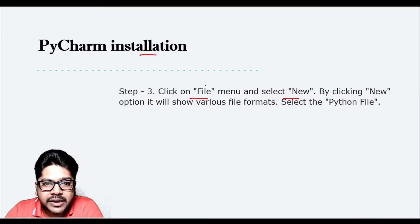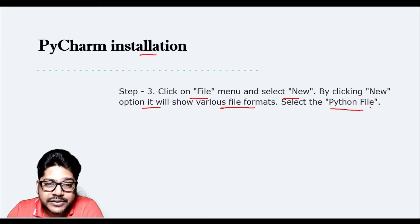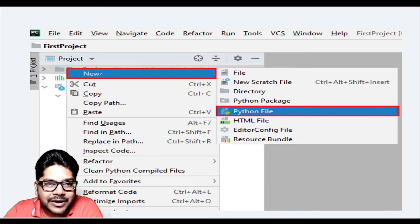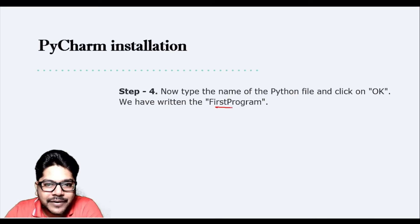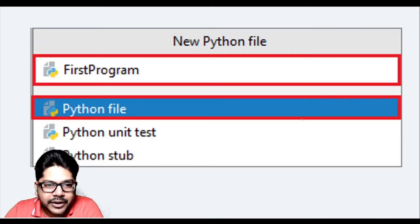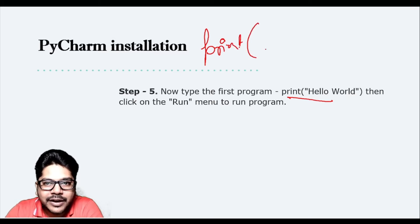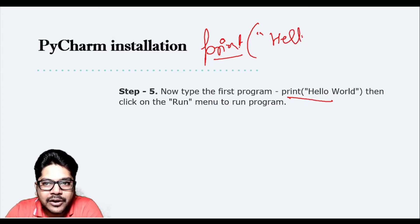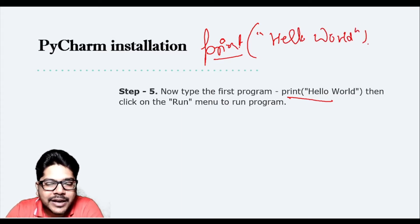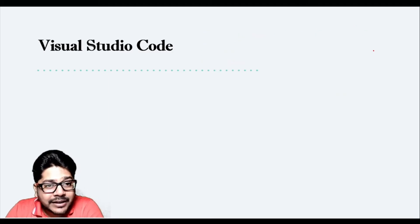After creating the project, click the File menu, select 'New', and choose 'Python File' from the format options. Name it something like 'first_program'. Then you can write your code — for example, 'print("Hello World")' or 'print("Welcome to Python")' — and your program will be ready to run.